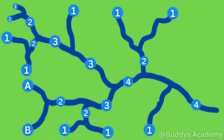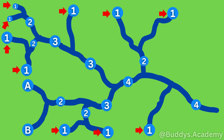Stream ordering can get quite complicated, as you can see in this diagram, so let's quickly tackle it. We can see that all the smallest streams will be the first order streams and they will be labelled as number one. Whenever a first order stream meets another first order stream, it will become a second order stream.